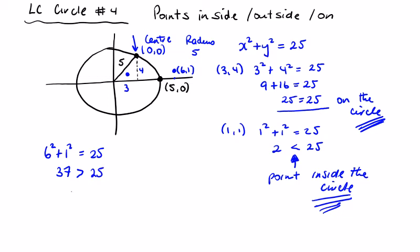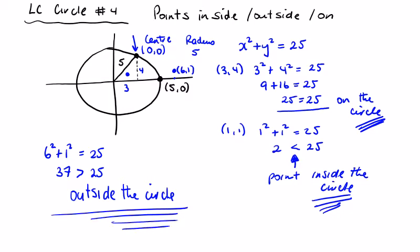When the value for the points is greater than the radius squared, we can say that it's outside the circle. So three really quick simple explanations for inside, outside, on. You should be able to remember these. I'll give you a couple of questions to practice and then you can move on to LC Circle 5.